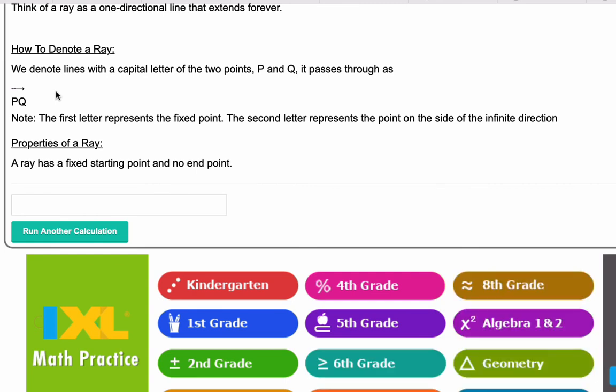And notice the way we write this. The first letter represents the fixed point always. The second letter represents the point on the side of the infinite direction of the ray. So it's important the order of letters that you write this in.